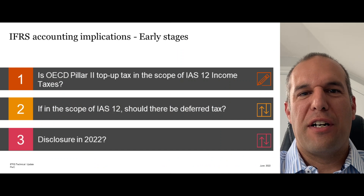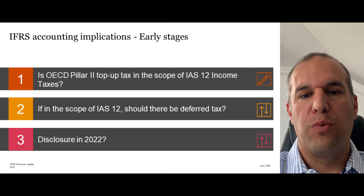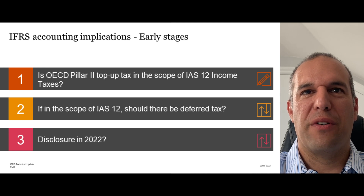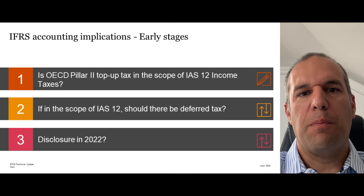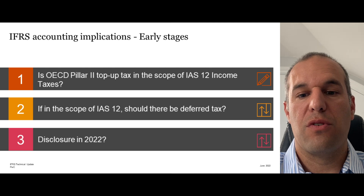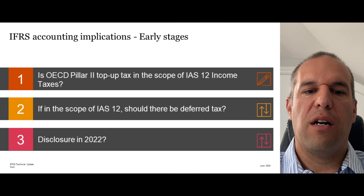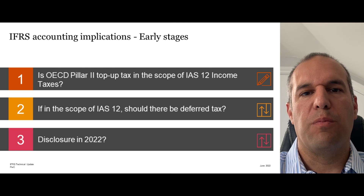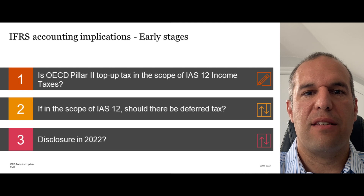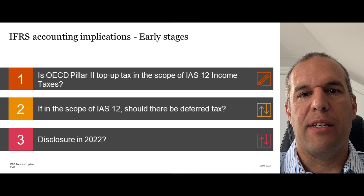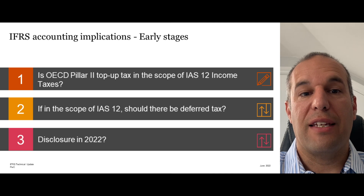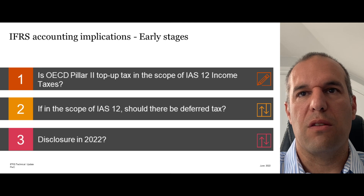Regarding accounting implications under IFRS, the rules are still relatively new and very complex. One question is whether this tax is in the scope of IAS 12. For the IIR, we are tentatively comfortable that it is a tax in the scope of IAS 12. For the UTPR, it's a little more questionable — although the determination of UTPR is on the same basis, when you reallocate that tax to other entities in the group, it's done on an employee and asset-based perspective. Tentatively, we still think UTPR will also be in the scope of IAS 12.